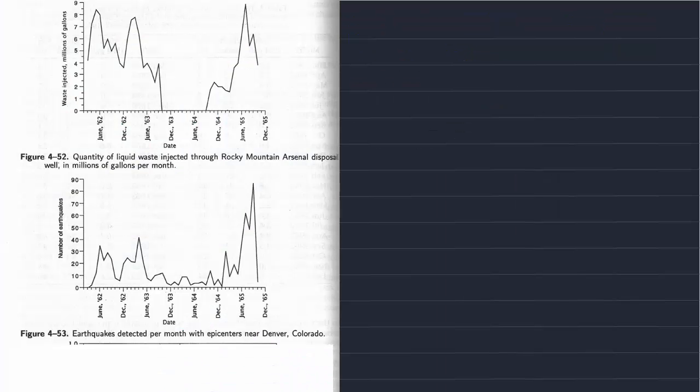So the example that Davis gives deals with data from the Rocky Mountain Arsenal. This was a chemical weapons manufacturing plant in Denver, Colorado at the Front Range of the Rocky Mountains. It was active for about 50 years ending in the early 90s.